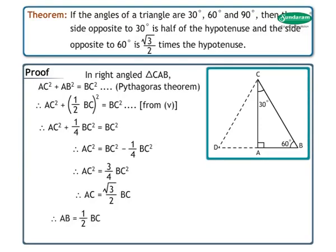Therefore, AB is equal to 1 upon 2 BC and AC is equal to root 3 upon 2 BC. Hence, the theorem is proved.